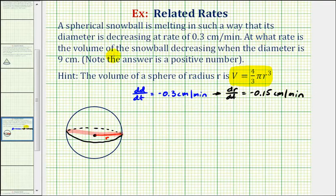We want to find out at what rate the volume of the snowball is decreasing, so we actually want to find the change in V with respect to time, or dV/dt. We also want to find dV/dt when the diameter is equal to nine centimeters. If the diameter is equal to nine centimeters, then the radius would be half this, or r is equal to 4.5 centimeters.